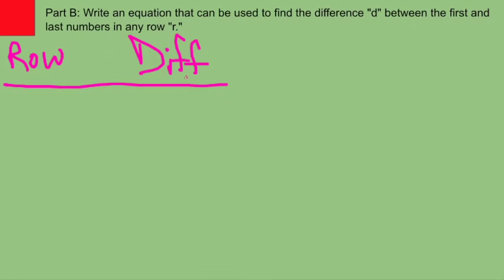I want to see what the connection is between row 1, 2, 3, 4, and so on, and the differences.